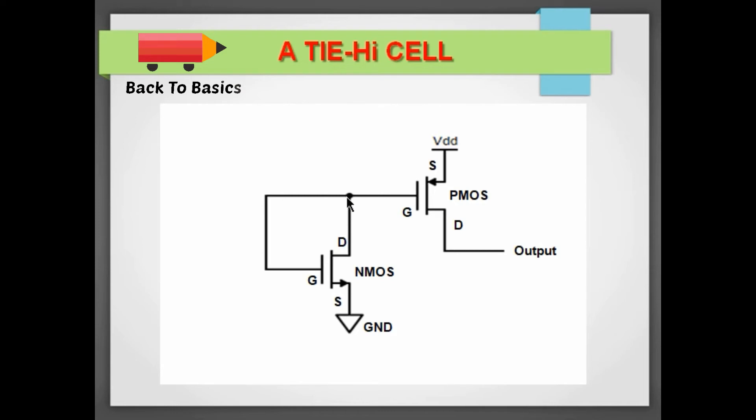And here the gate and drain of this NMOS transistor are connected together, that is, gate and drain are shorted, and source is connected to the ground. Now we know that for NMOS transistor to be in saturation mode, these two equations need to be true.